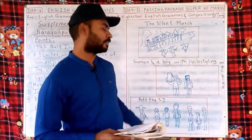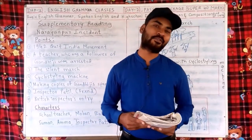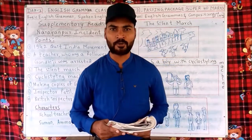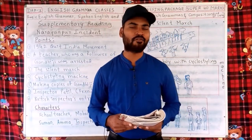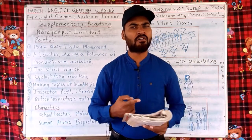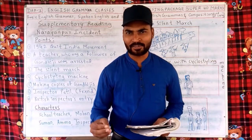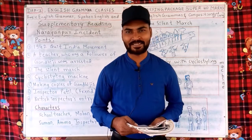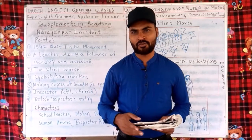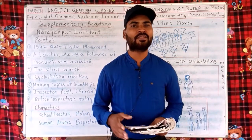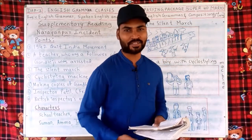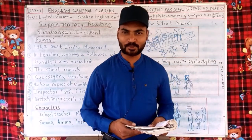This incident takes place during 1942. Mahatma Gandhi gave a call to the British to quit India in August 1942. Different kinds of agitations, strikes, hartals, and movements took place all over India. In Narayanpur, a small village, a different kind of agitation also takes place against the British. A school teacher was arrested by British people.